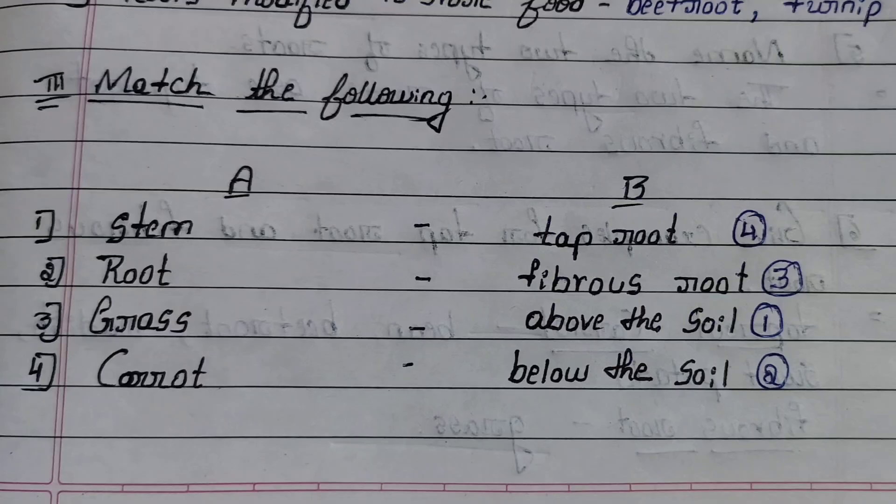Third section: match the following. First one, stem — answer: above the soil. Second one, root — answer: below the soil. Third one, grass — answer: fibrous root. Fourth one, carrot — answer: taproot.